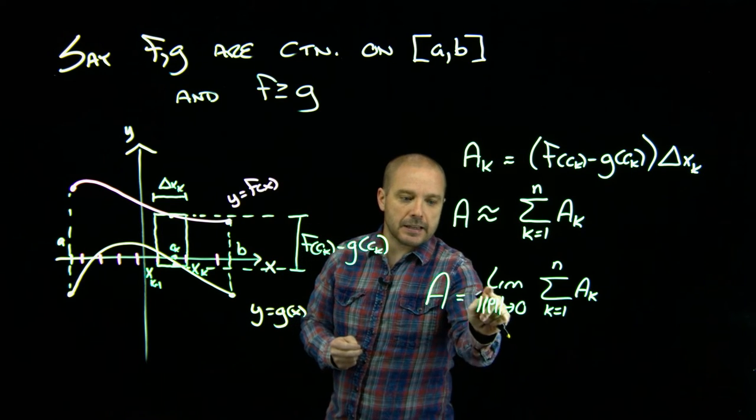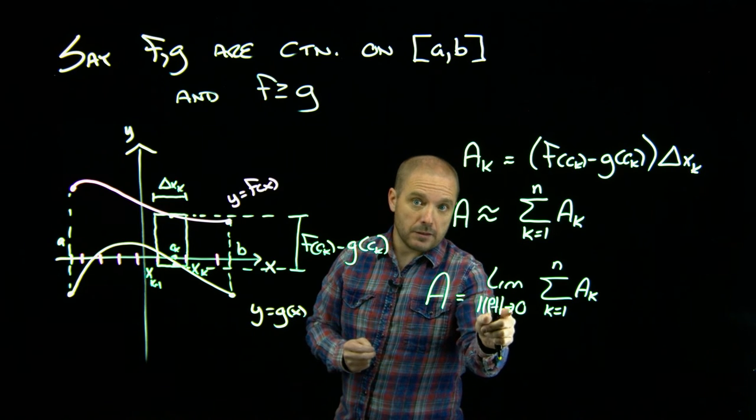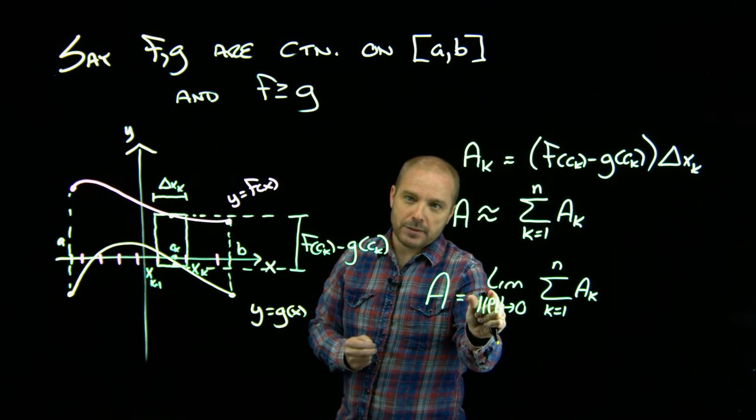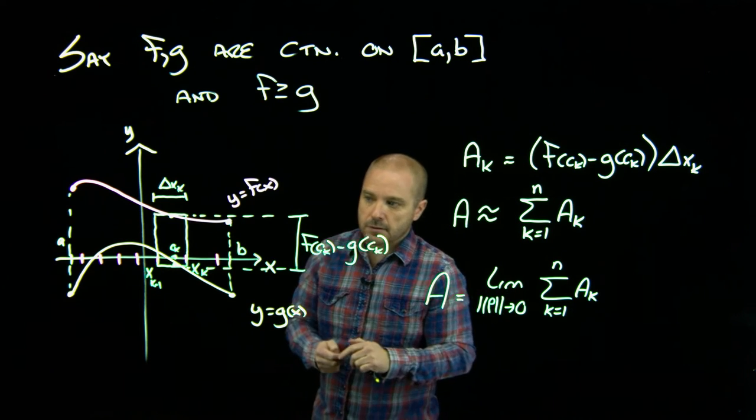Specifically, it says have the largest width head to zero. And if the largest width is heading to zero, all the widths are heading to zero.